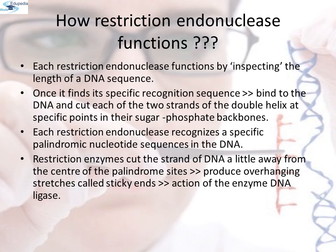How restriction endonucleases function: each restriction endonuclease functions by inspecting the length of a DNA sequence. Once it finds its specific recognition sequence, it will bind to the DNA and cut each of the two strands of the double helix at specific points in the sugar-phosphate backbone. Each restriction endonuclease recognizes specific palindromic nucleotide sequences in the DNA. Palindromes are groups of letters that form the same word when read both forward and backward — for example, Malayalam: M-A-L-A-Y-A-L-A-M reads the same from both directions.